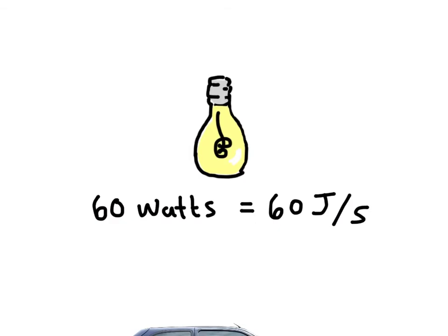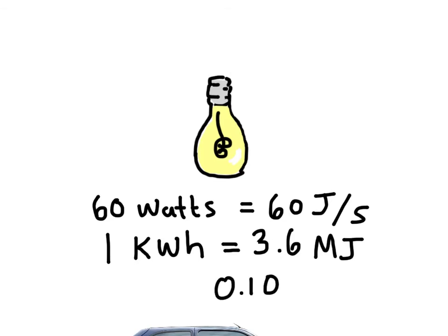However, the hydro company bills you by the kilowatt hour. And this is the bill for the electricity that you use. And one kilowatt hour is equal to 3.6 megajoules, or in other words, 3.6 million joules. Oh, and by the way, a kilowatt hour costs about 10 cents. And so it's really not that expensive in the end.